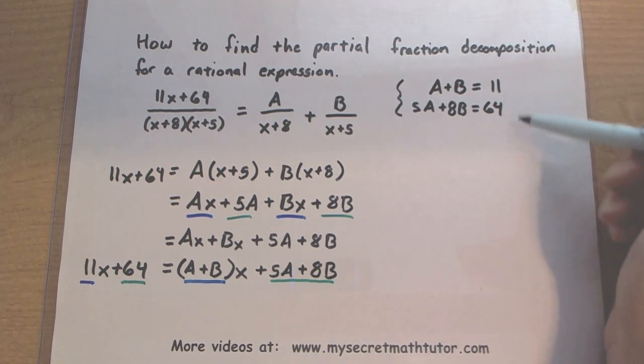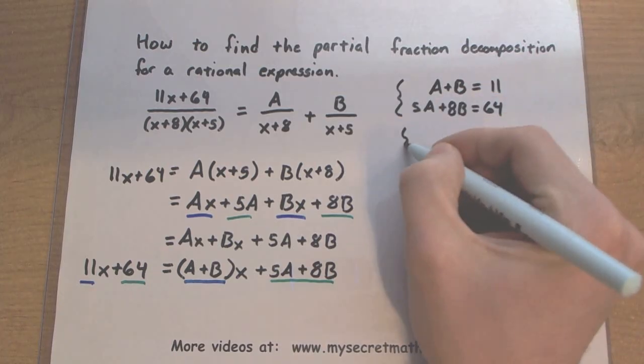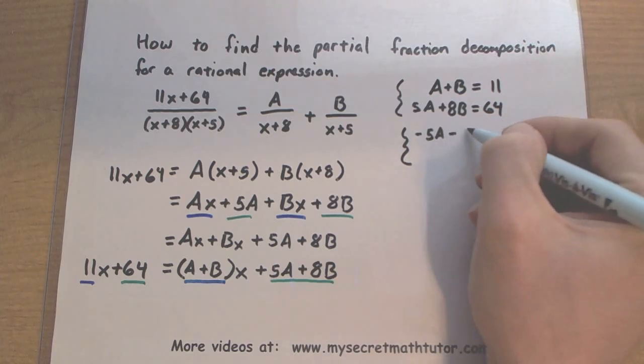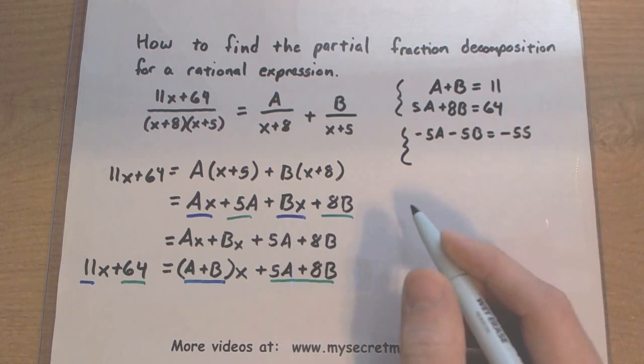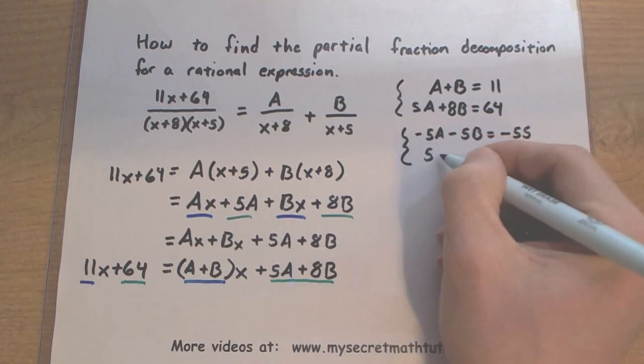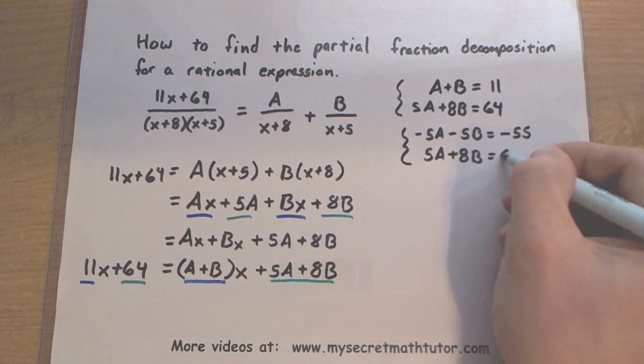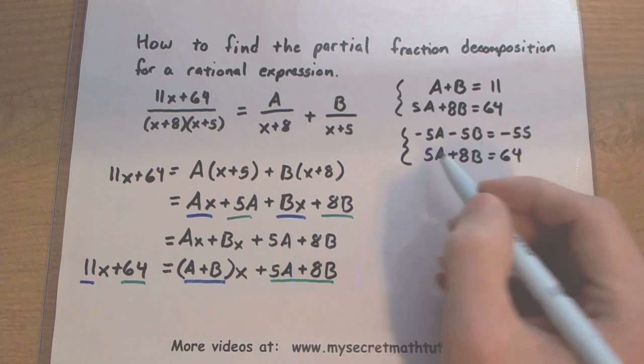I'm going to solve this system using the elimination method. I'll take the first equation, multiply through by a negative 5. And the second equation, I'm not going to change whatsoever. Let's add these two equations together. Negative 5A plus 5A, those drop away.